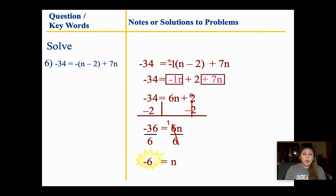Quick review: I put a 1 right here as a placeholder to distribute this negative. Negative 1 times n gives me negative 1n. Negative 1 times negative 2 gives me positive 2. Bring down 7n and negative 34. Combine like terms — negative 1n plus 7n gives 6n because 7 minus 1 is 6, and 7 is bigger so it stays positive. Subtract 2 from both sides: negative 34 minus 2, same sign, add and keep, gives negative 36. Divide by 6, and n equals negative 6.